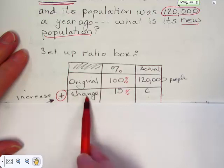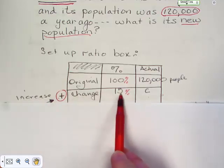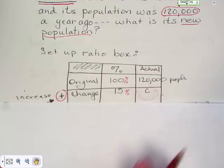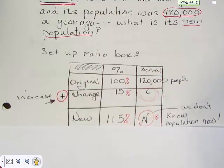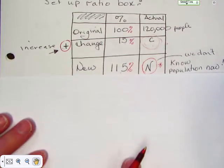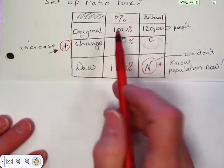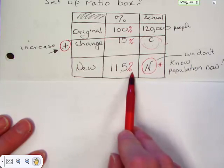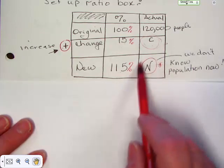You have your original hundred percent is a hundred and twenty thousand people. That's where they started. They increased fifteen percent, so you put fifteen percent here. And this will be the amount of increase. We don't know what that is yet, but that's okay. We don't need to right now.